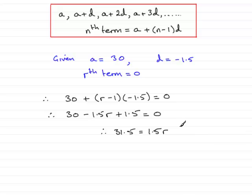Now, dividing both sides by 1.5 gives r to be equal to 31.5 divided by 1.5.